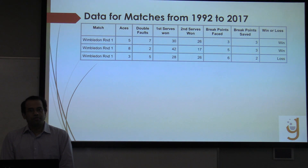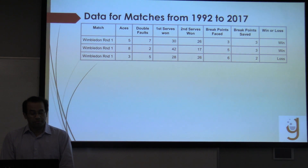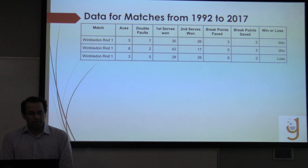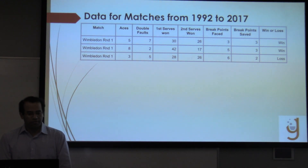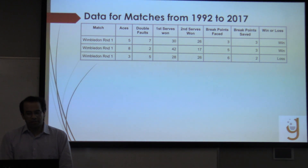The data in the project come from matches from 1992 to 2017. The data is organized in rows where each row has the stats of a particular player in a match and whether they won or lost.